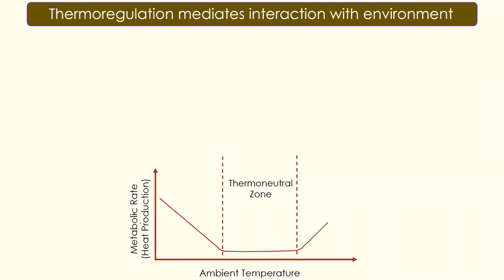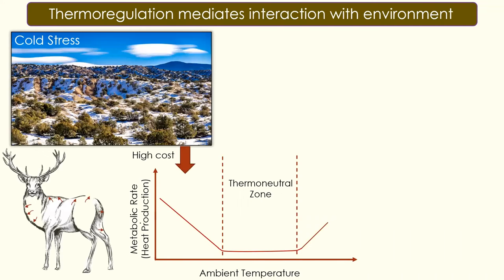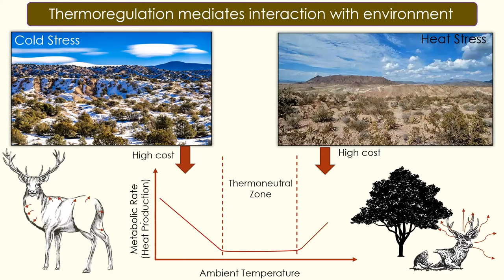Under cold stress, an animal will increase its metabolic rate by expending more of its resources in order to maintain a constant body temperature across time. Conversely, under heat stress, an animal will also expend more resources to increase metabolic rate in order to lose heat via behaviors such as panting or losing heat via its extremities.